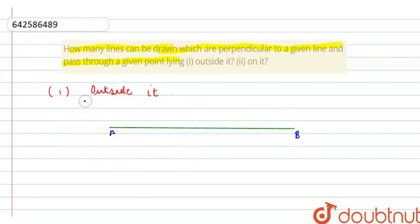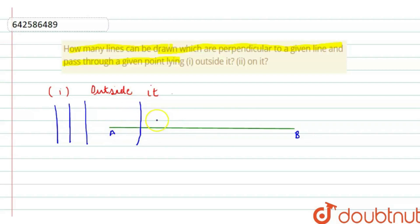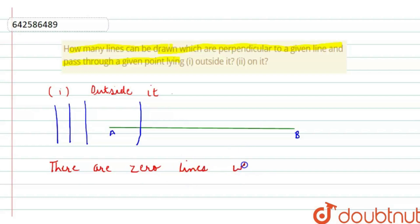So if I consider this point: is this line perpendicular? No. Is this line perpendicular? No. Basically, the condition for the line to be perpendicular is that it has to pass through this point. Perpendicular means 90 degrees. This line is considered perpendicular because it is passing through AB, but not the lines which are outside it. So it means that for a point outside it, there will be 0 lines.